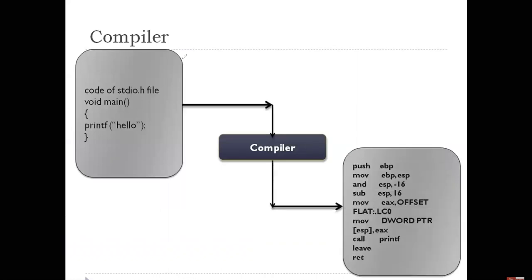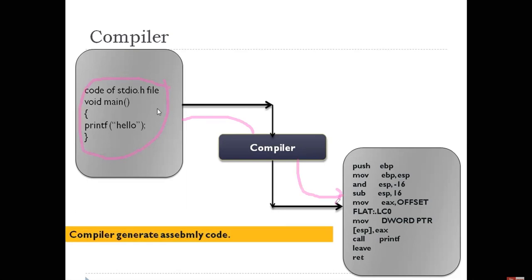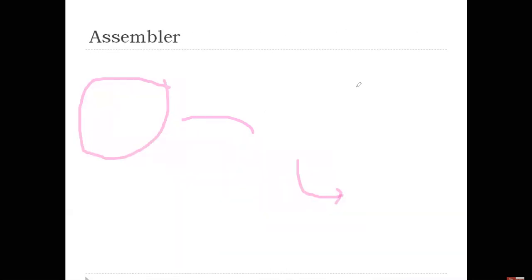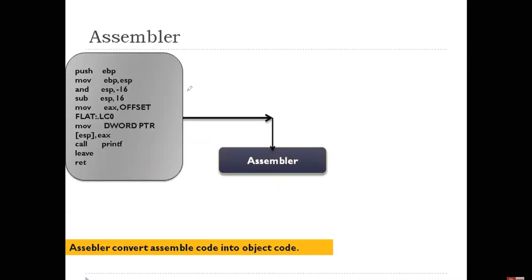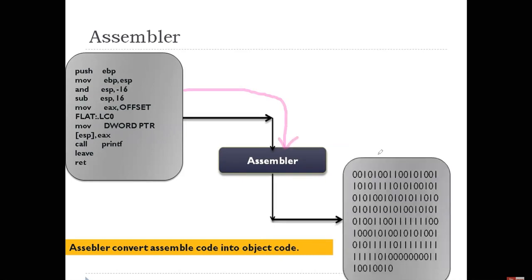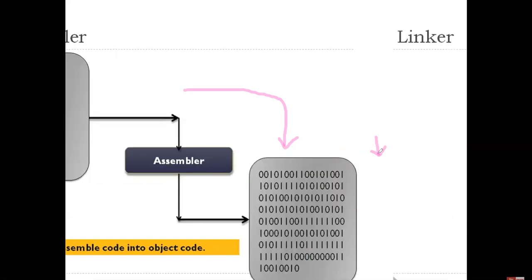Now, how is the pre-processed code sent to the compiler? The moment the preprocessor produces its output, it is submitted to the next module named the compiler. The compiler converts the entire piece of source code into assembly-level language. Subsequently, the assembly-level language program is given to the next component, the assembler. The assembler converts it into object code, machine code, target code, or zeros-and-ones form.